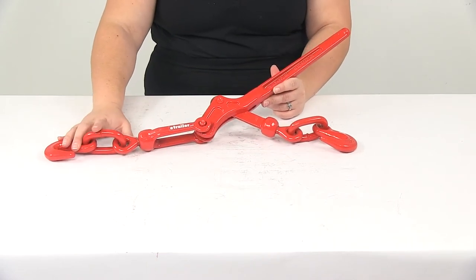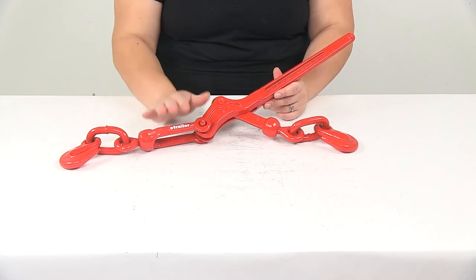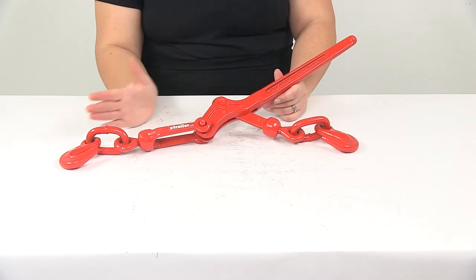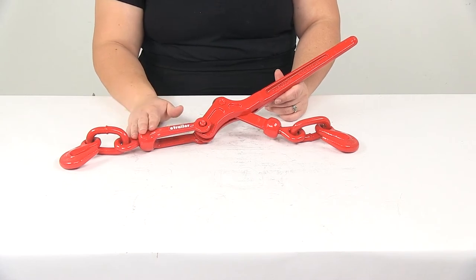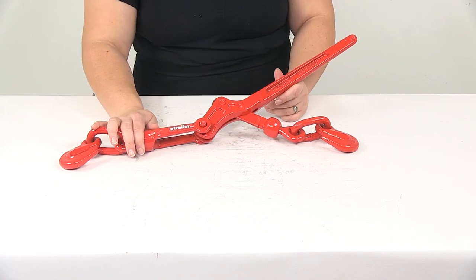This load binder is designed to work as part of a complete tie-down system, and the overall capacity depends on the safe working load limit of the chains you choose as well as the capacity of the load binder itself. The item being tied down must not exceed the combined working load limit of the lowest rated component in the system. You're only as strong as your weakest link, basically.